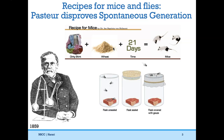It wasn't until Louis Pasteur did a very clever experiment that spontaneous generation was disproven. He took three flasks with meat in them: he left one unsealed, one sealed, and one covered with gauze.